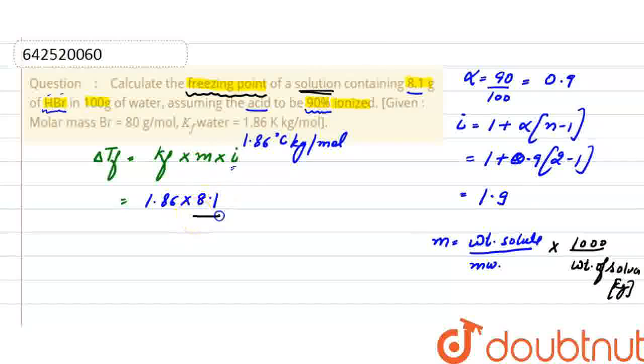Weight of solute is 8.1 grams. The molecular weight of HBr is 80 + 1 = 81. So molality = (8.1/81) × 1000/100 × 1.9.